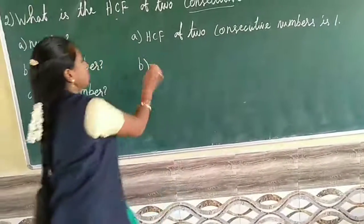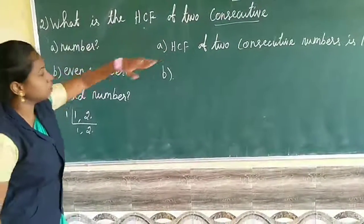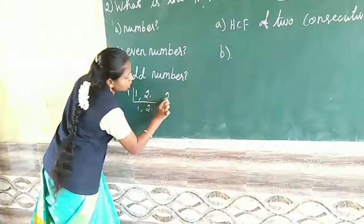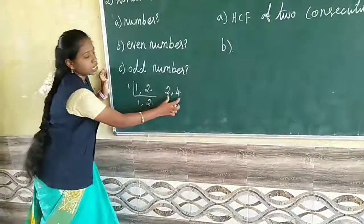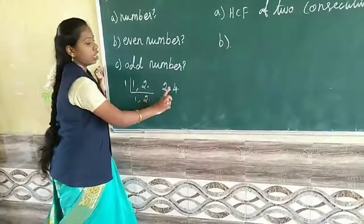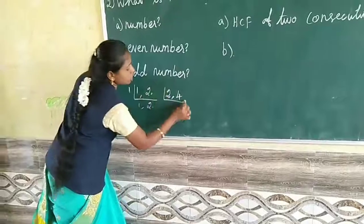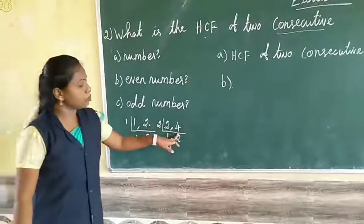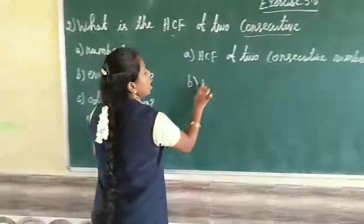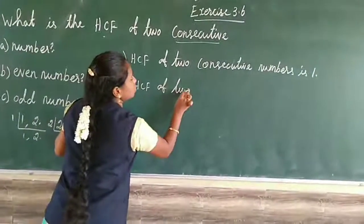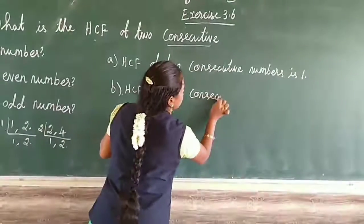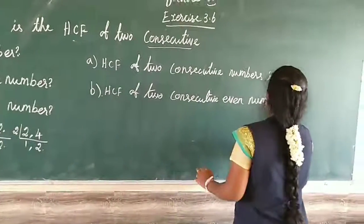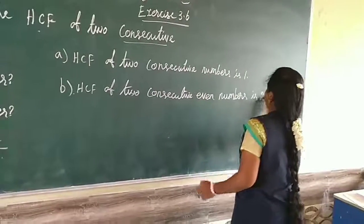Now part b. What is the HCF of 2 consecutive even numbers? 2 continuous even numbers. Even numbers are 2, 4, 6, 8. 2 continuous. So in the 2 numbers there are 2 tables. So 2 continuous even numbers, HCF is 2. HCF of 2 consecutive even numbers is 2.